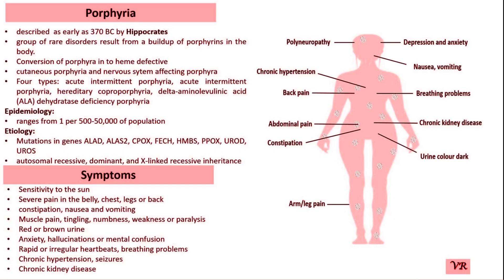Hemin, also known as heme arginate, is the main treatment for acute attacks. It helps suppress the production of porphyrin precursors by providing heme, which down-regulates the enzymes involved in the heme biosynthesis pathway. Hemin is typically administered intravenously during an acute episode, especially in severe cases, and can reduce symptoms such as abdominal pain, neurological dysfunction, and other acute manifestations. Glucose can also help suppress porphyrin precursor production by promoting negative feedback of heme biosynthesis; high doses of intravenous glucose or oral glucose may be used depending on the severity of the attack, and glucose is often used in combination with heme therapy.